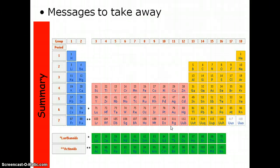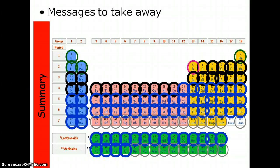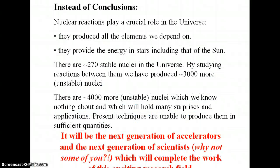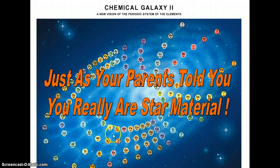So basically, we start with hydrogen and helium, skip over lithium and beryllium, go on to carbon all the way up to iron — with no more fusion past iron — and then supernovae explosions make everything past iron that is not man-made. The gray highlighted elements on the periodic table are all man-made. Nuclear reactions are very crucial: they produce all the elements we depend on and provide the energy in stars including our sun. There are approximately 270 stable nuclei in the universe; by studying these reactions we have produced more than 3,000 unstable nuclei, and there are more than 4,000 unstable nuclei we know nothing about. Your parents told you you really are star material.